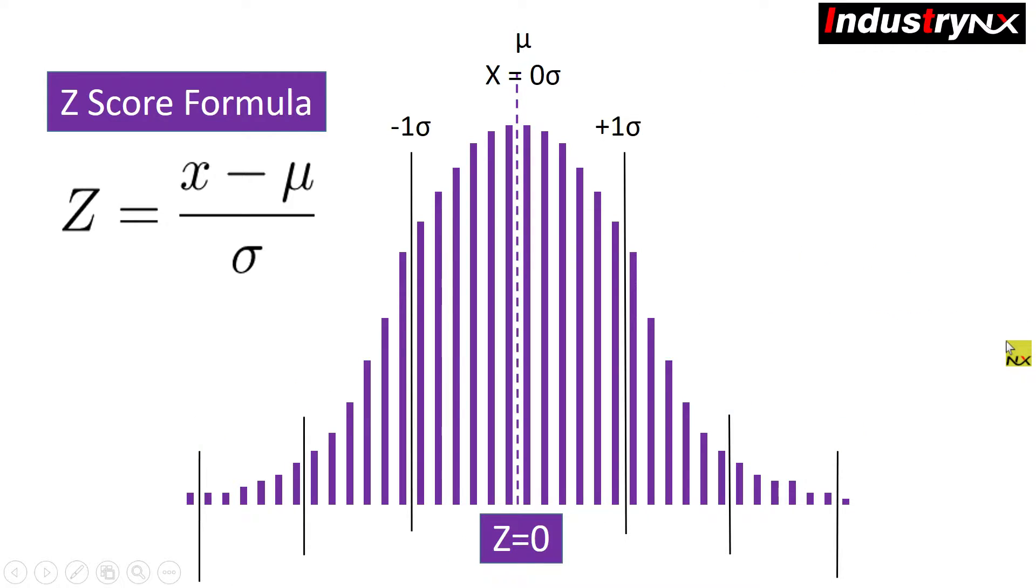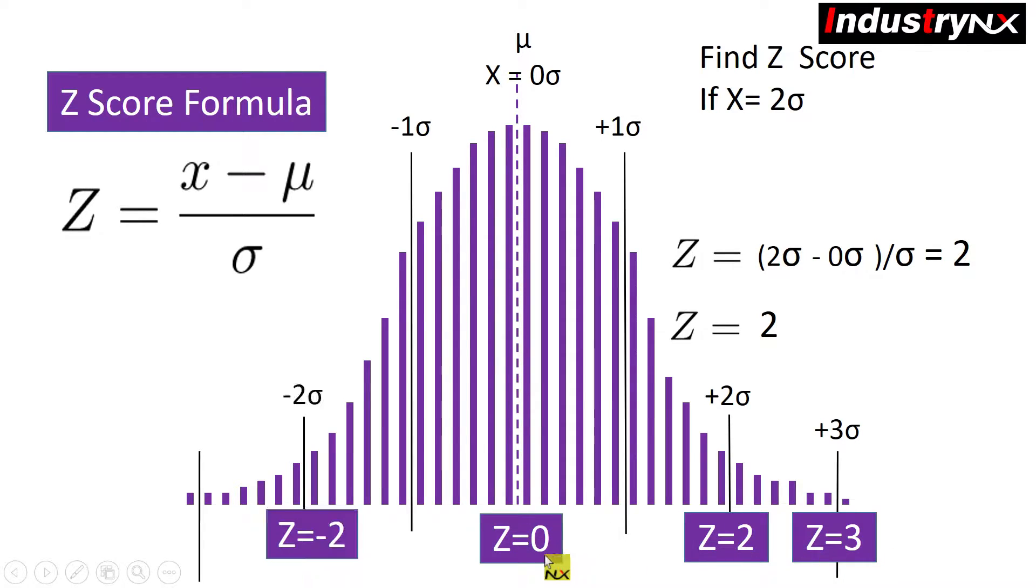Let us find z-score where x is equal to 2 sigma. Then z-score is equal to 2 sigma minus 0 sigma divided by sigma which equals to 2. In short, 2 sigma z-score is 2 and 3 sigma z-score is 3, and also minus 2 sigma z-score is minus 2 and minus 3 sigma z-score is minus 3.